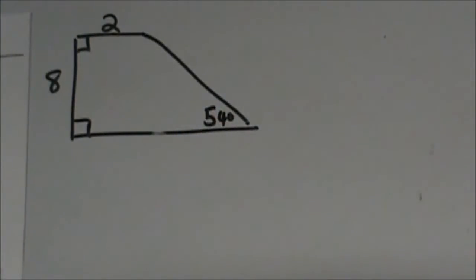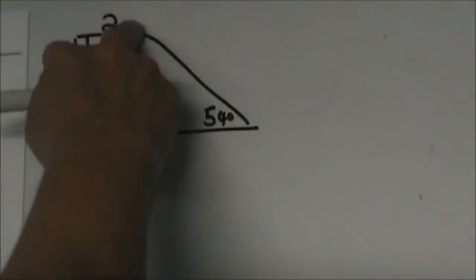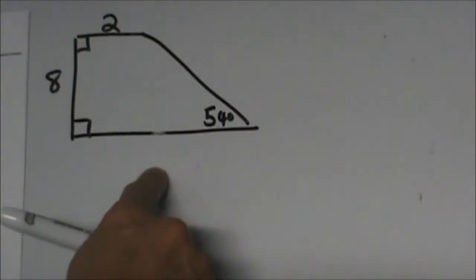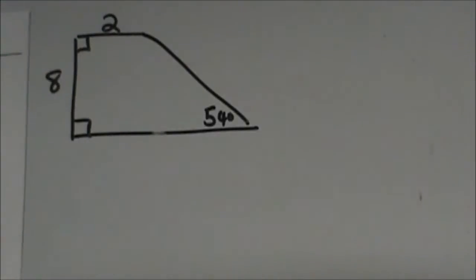We need to find the perimeter. We know two sides but we don't know two sides, so we're going to have to solve for these. Now watch what I'm going to do. Strategically, I'm going to draw in an altitude.